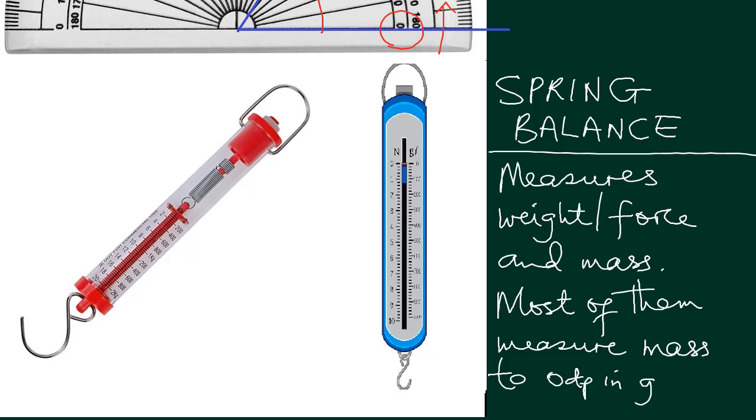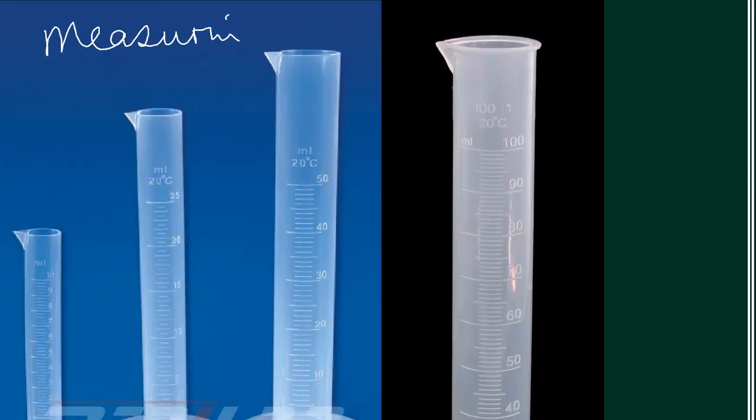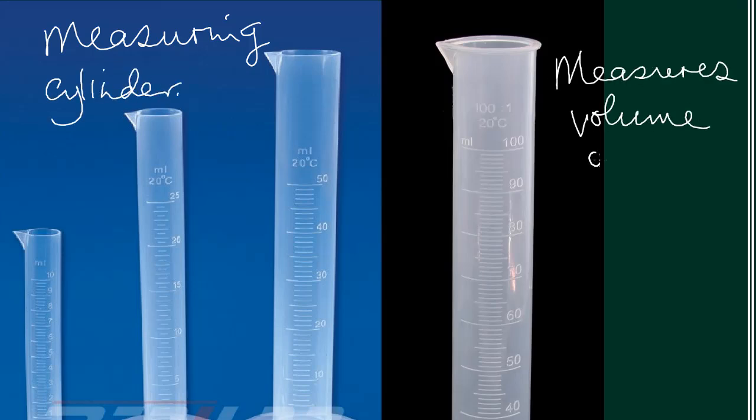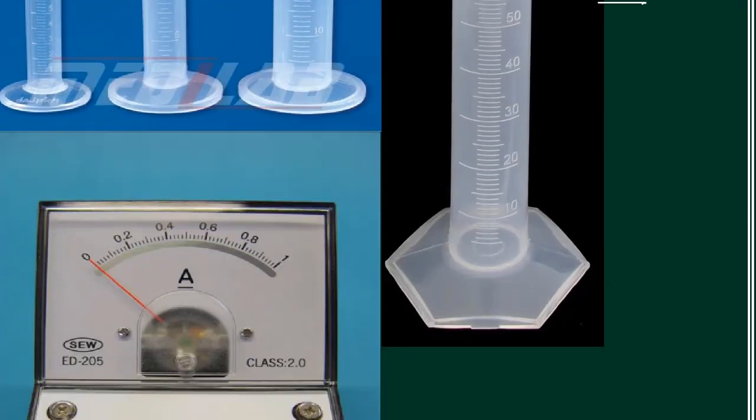So the grams usually will go to zero decimal places. Then the measuring cylinder measures volume of liquids to zero decimal places in cubic centimeters.